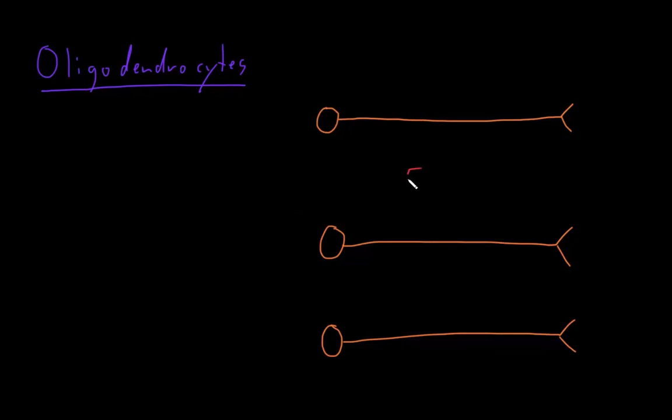I'll draw the somas for a couple of oligodendrocytes, one here and one here, and each oligodendrocyte will extend a few processes, maybe up to a few dozen processes each, toward the axons of neurons.